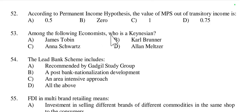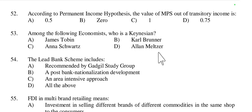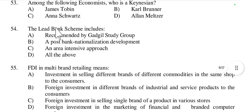Question 53: Among the following economists, who is a Keynesian economist — Tobin, Brunner, Schwartz, or Metzler? James Tobin is a Keynesian economist. So option A is right.